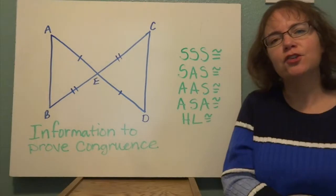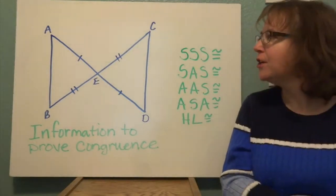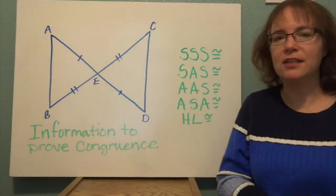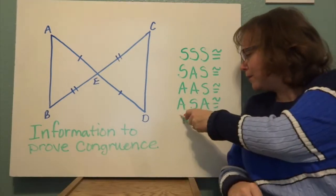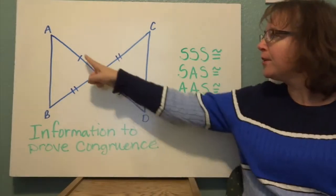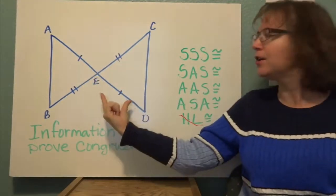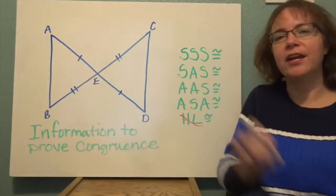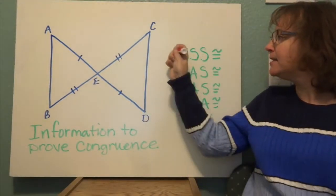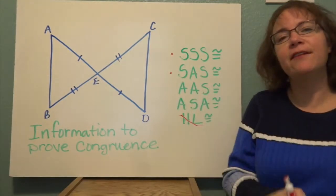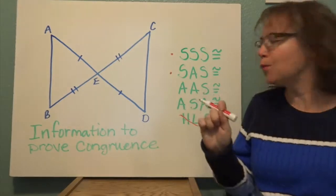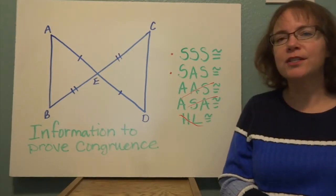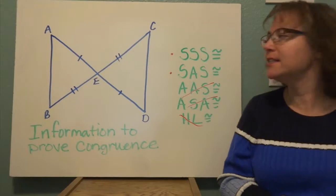So we want to look at that information to prove congruence before we even start. Looking at these triangles, we can see it's not told to us that it's a right triangle, so we probably won't be using hypotenuse-leg. We can also see that we have a corresponding side here that's congruent and another one — so we have two sides that are given to us, and we might be able to prove the triangles congruent using those sides. I'm going to cross out angle-angle-side and angle-side-angle for now, because I think I'll be able to use one of the congruence shortcuts that includes the sides.